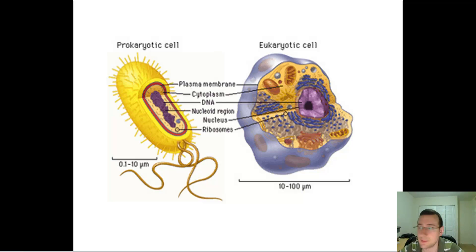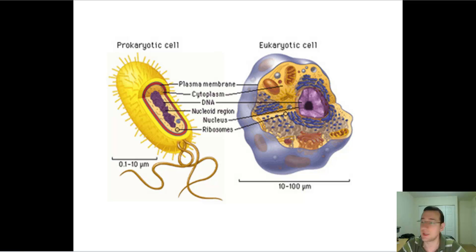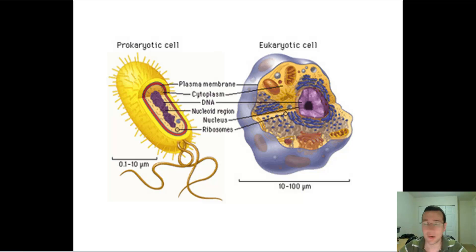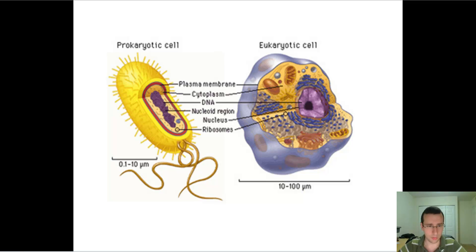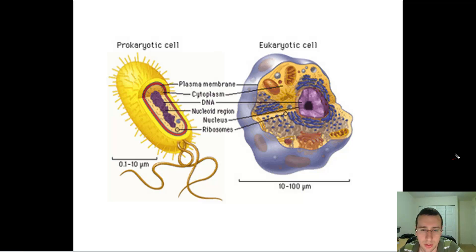Prokaryotic cells are also much smaller than eukaryotic cells. A lot of the DNA synthesis processes are different, as is protein synthesis, gene expression control, and the differences go on and on. For this reason, we used to separate these two things into two major groups of the tree of life: one group called prokaryotic cells and one group called eukaryotic cells.